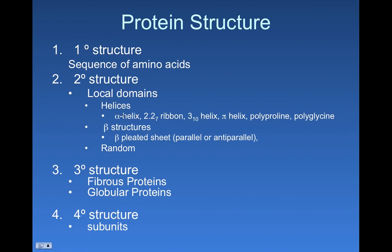And there's lots of things besides helices or alpha helices that can be secondary structures. We'll look at the alpha helix in depth, and then we'll look at beta sheets, which look very different than the alpha helix. But they're local domains.